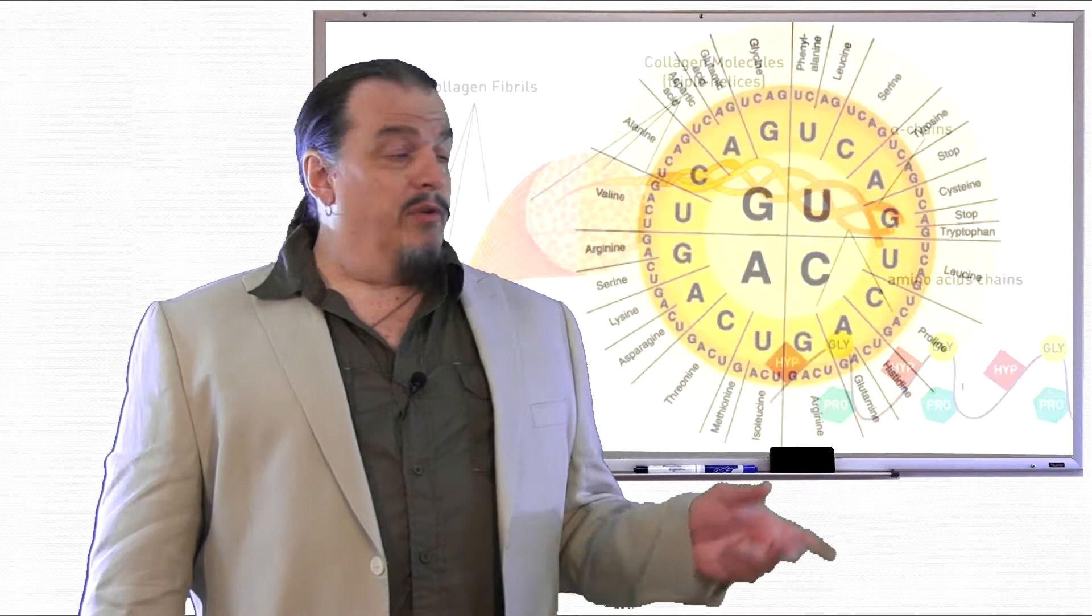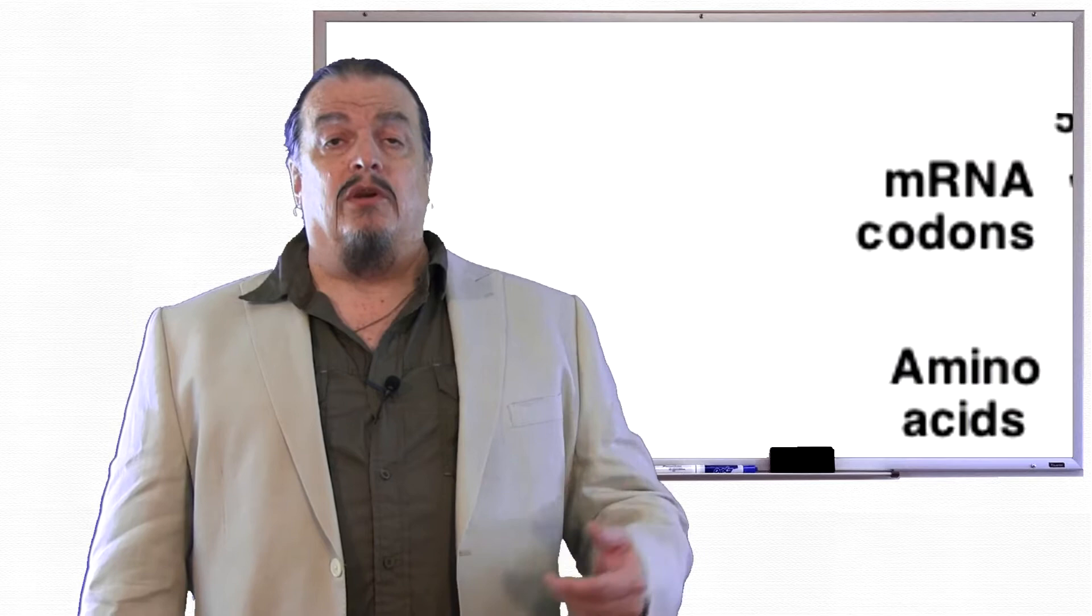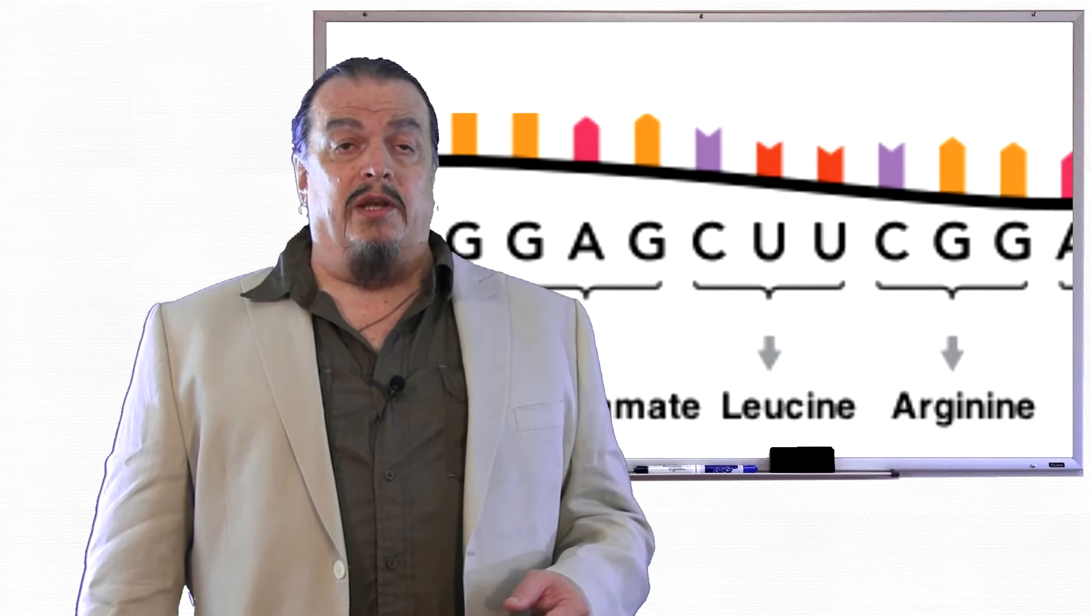And one thing you may have noticed on this chart is that not all codons code for amino acids. Some are stop codons. Stop codons help stop the mRNA chain because the amino acid chain for producing a protein is finished.